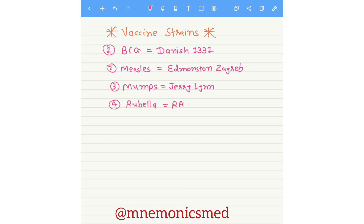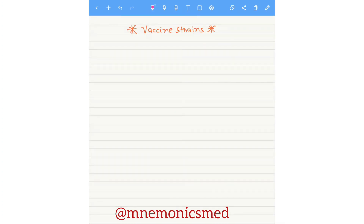Now we are learning about rubella. Its vaccine strain is RA 27/3, so you can easily remember that. Now we are learning about yellow fever — its vaccine strain is 17D. Now we are learning about varicella — its vaccine strain is Oka. You have to remember Oka as the vaccine strain for varicella.